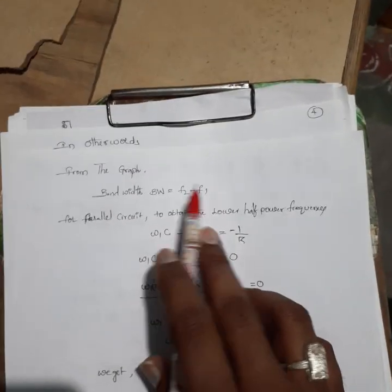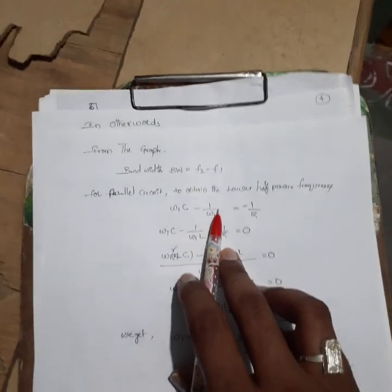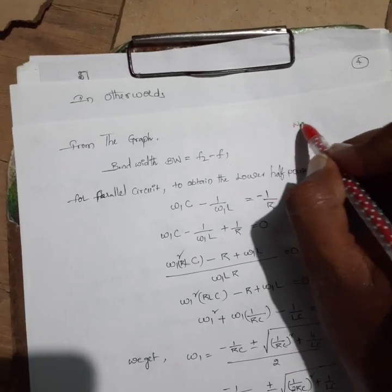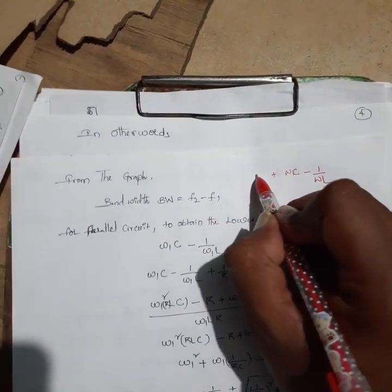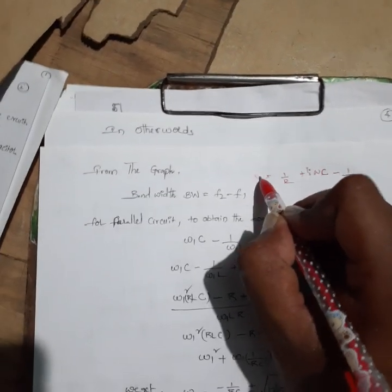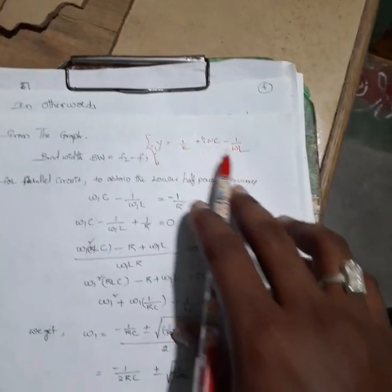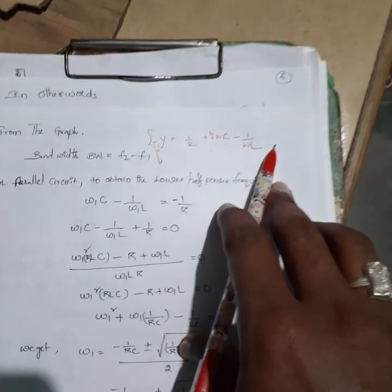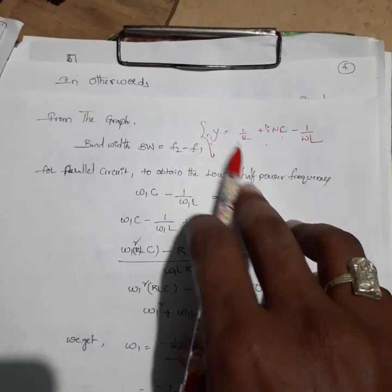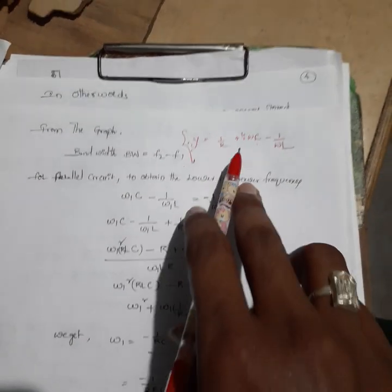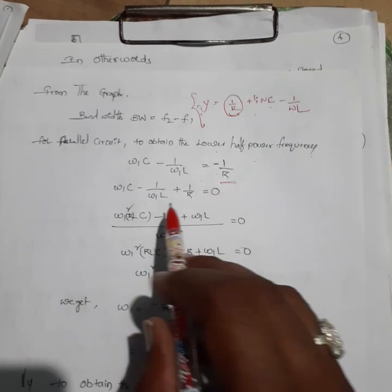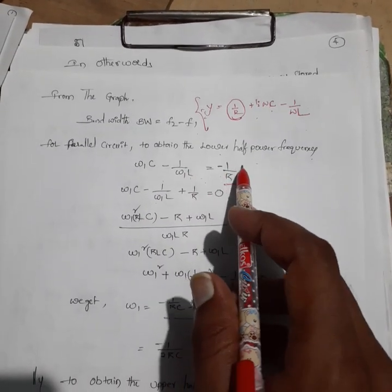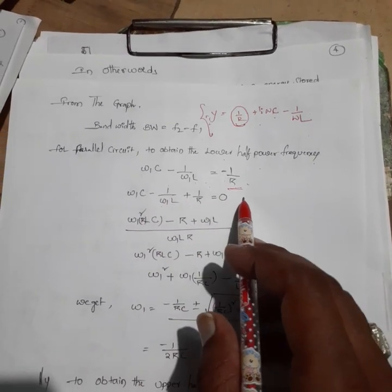To calculate the bandwidth of the parallel circuit, we use the admittance expression: Y = 1/R + j(ωC − 1/(ωL)). For the lower half-power frequency condition, the imaginary part equals −1/R, giving: ω₁C − 1/(ω₁L) = −1/R, or equivalently ω₁C − 1/(ω₁L) + 1/R = 0. Taking the LCM as ω₁LR and equating to zero gives a quadratic equation.